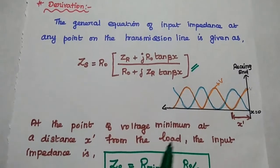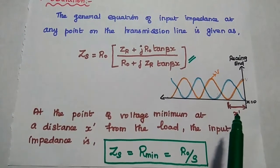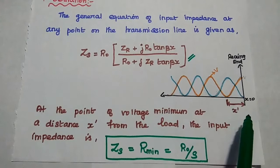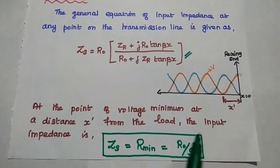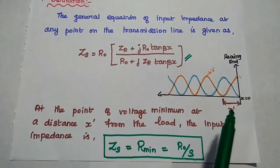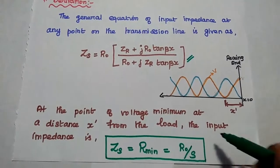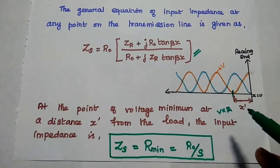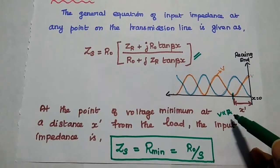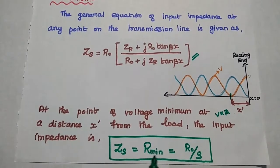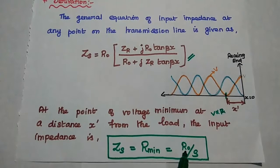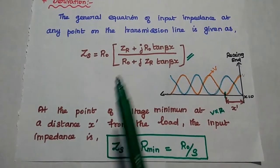At the receiving end, we can consider the voltage minimum point at a distance x-dash. At the point of voltage minimum at a distance x-dash from the load, the input impedance can be given as Zs equal to R_minimum. Whenever the voltage value is minimum, its resistance is also minimum, because V is directly proportional to resistance. So at the point of minimum voltage, the input impedance is given as Zs equal to R_min, which equals R0 divided by S.